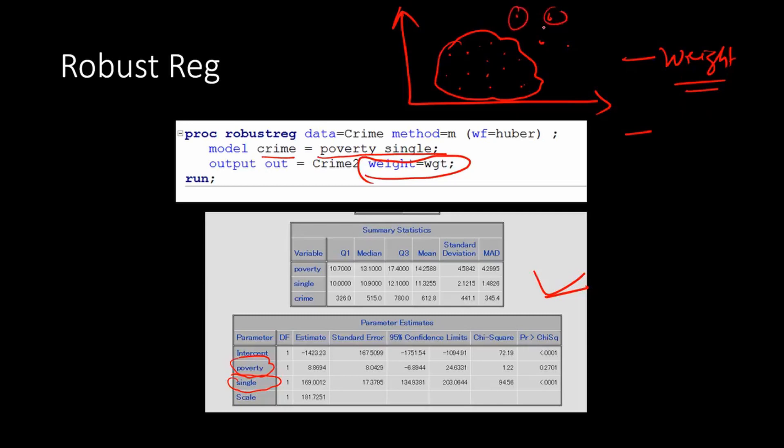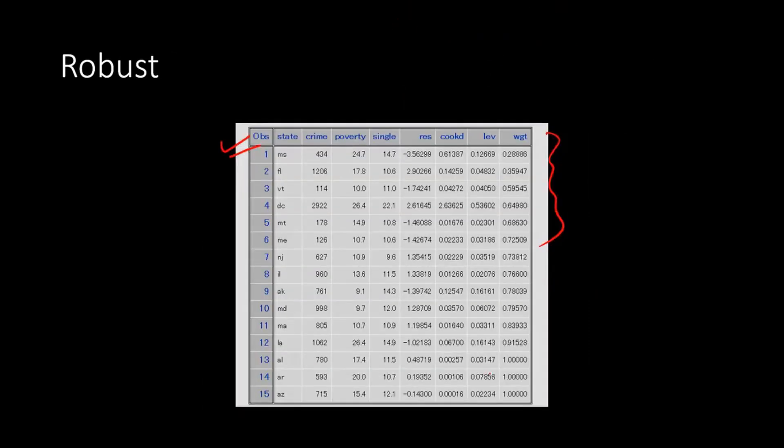That means the contribution by the outliers in your estimation process is much less compared to the observations which are not outliers. And it depends on the Cook's distance as to which one will have the highest weight and so on. So the best observation will have the most weight in the estimation process. And the weight given to these good observations is actually more and to the bad observations is actually less. And this is exactly the difference between OLS and robust regression. So in OLS your weight will be nothing but 1 by the number of observations. Whereas in robust regression it will vary a lot.